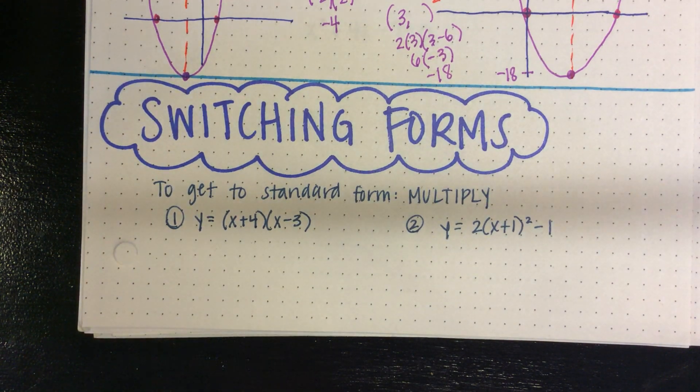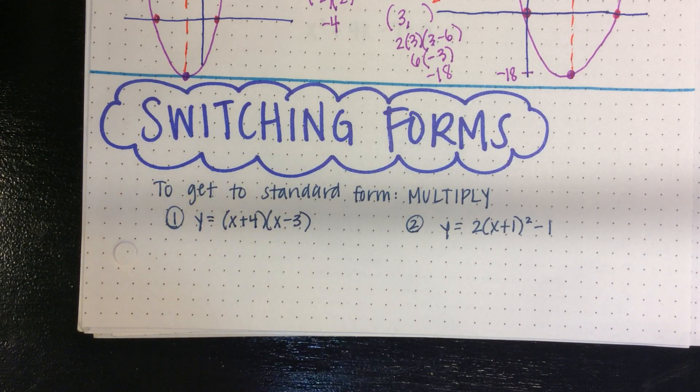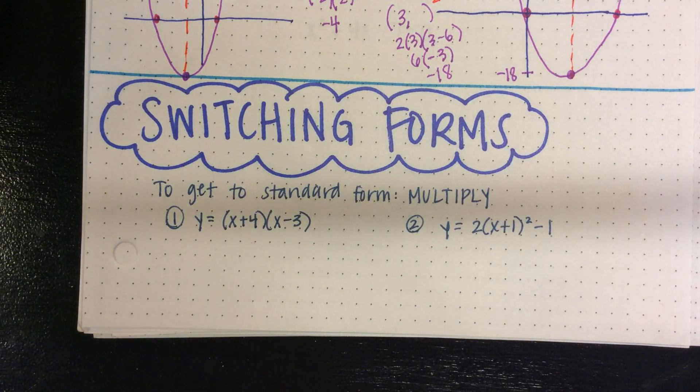Another thing we're going to have to do with quadratics and our different forms for quadratics is switch back and forth. So you're going to have to get to a different form given standard form or vertex form or any of them. To get to standard form, it's actually pretty easy, no matter what. There's no parentheses, there's no factors, anything like that. So to get to standard form, you take your other forms and you multiply them out.